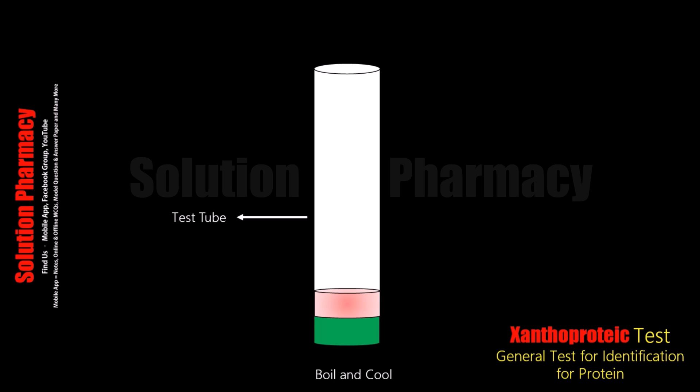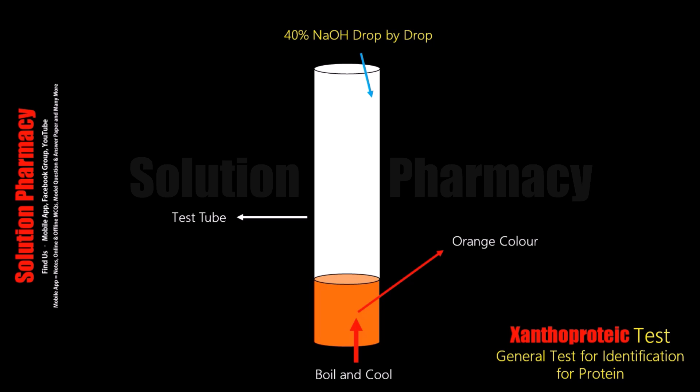If aromatic amino acid is present in our sample, it will react with the concentrated nitric acid on heating and a yellow-colored substance forms, changing the color of the test tube contents to yellow. Then add 40% NaOH solution (sodium hydroxide) drop by drop — about 1 ml — to make the content alkaline. After this, if we observe an orange color, it means aromatic amino acid is present in our sample.